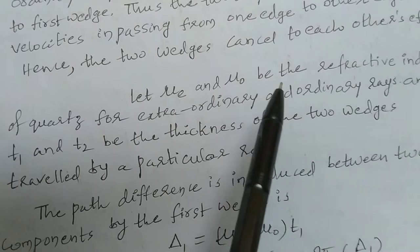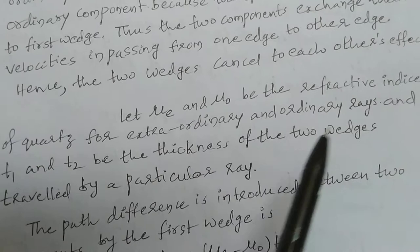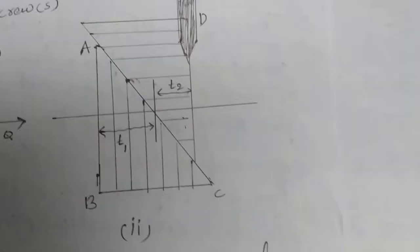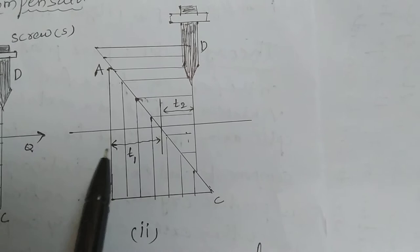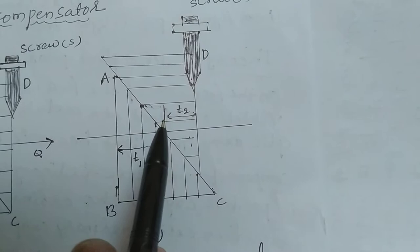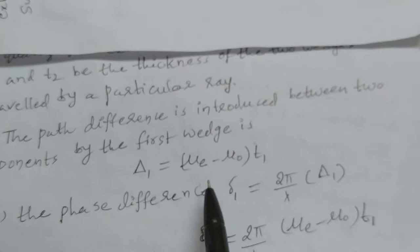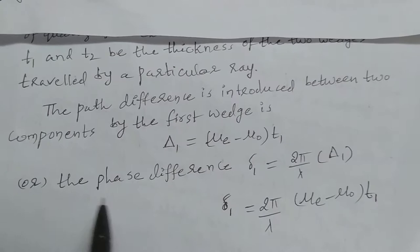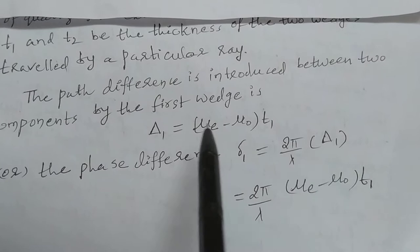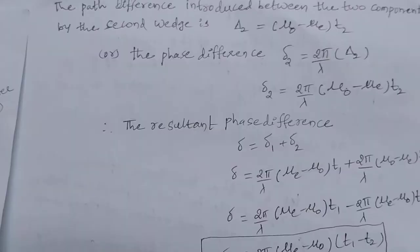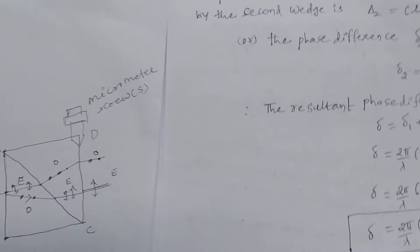Let μ_e and μ_o be the refractive indices of quartz for extraordinary and ordinary rays, and t1 and t2 be the thicknesses of the two wedges traveled by a particular ray. The path difference in the first wedge is: Δ1 = (μ_e − μ_o) × t1. The corresponding phase difference is: δ1 = (2π/λ) × (μ_e − μ_o) × t1.